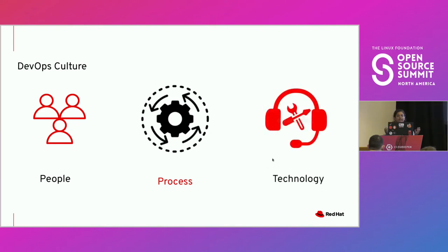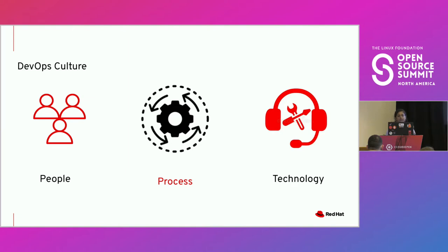What binds all of this together is, of course, your technology — something that's continuously evolving and changing. As part of the Emerging Technology Group at Red Hat, this is something we are highly passionate about, because there are so many new ways to do different workflows, whether it's from your security aspects, automation pipelines, quality assurance pipelines, or even from a data science perspective. Having these three interconnected is what makes your culture as strong as it can be.